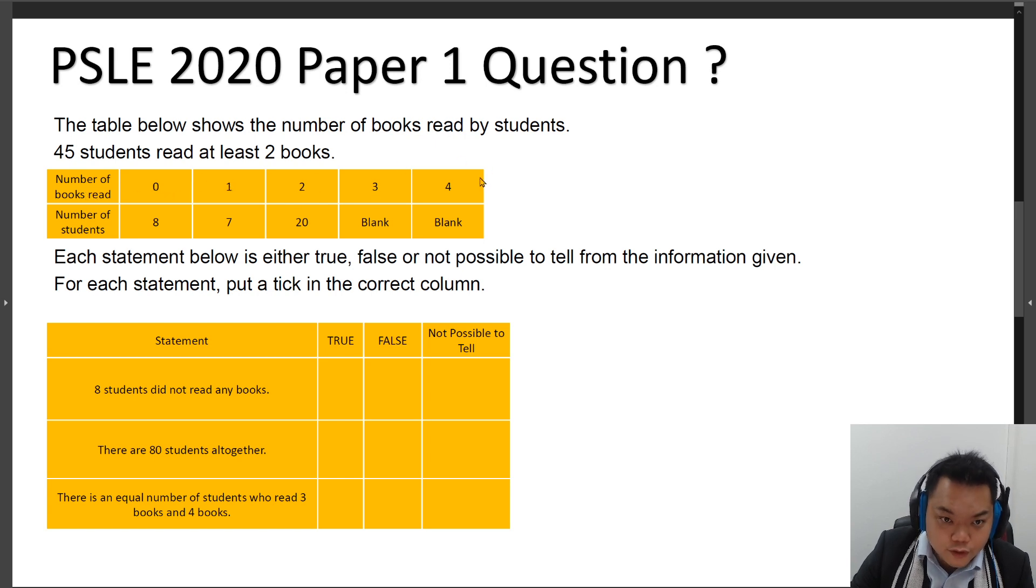0, 1, 2, 3, 4. Then the number of students that read these number of books are here. The number of students for 3 books read is blank and so is the number of books read for 4. The number of students here is blank as well.